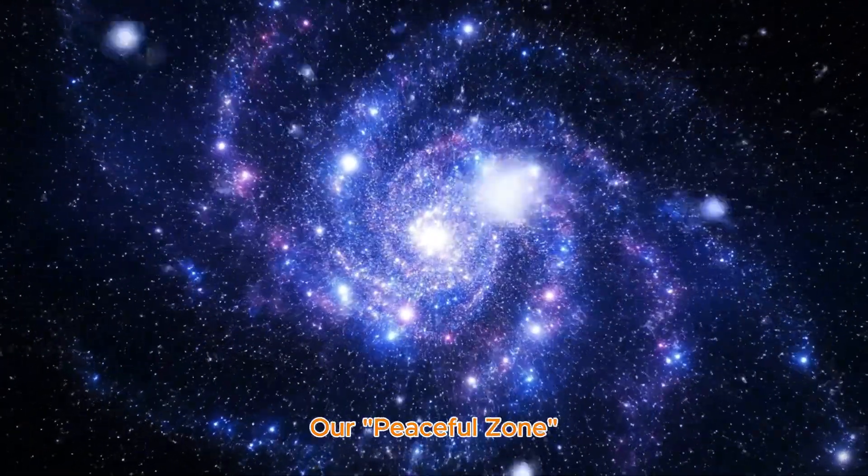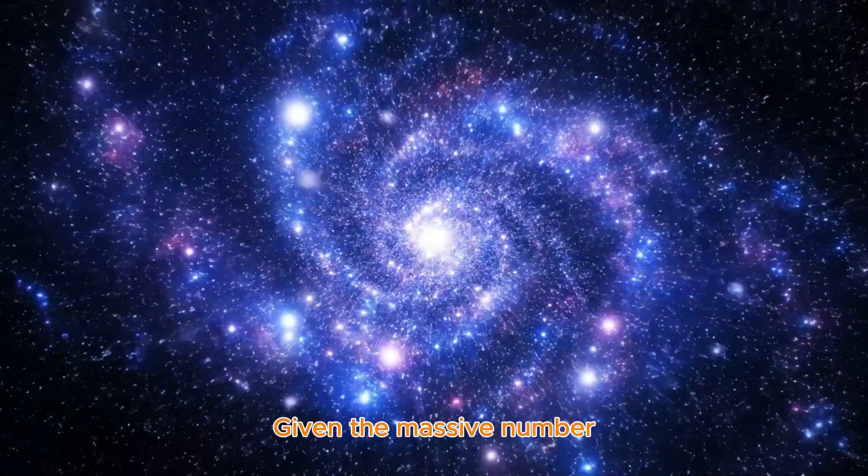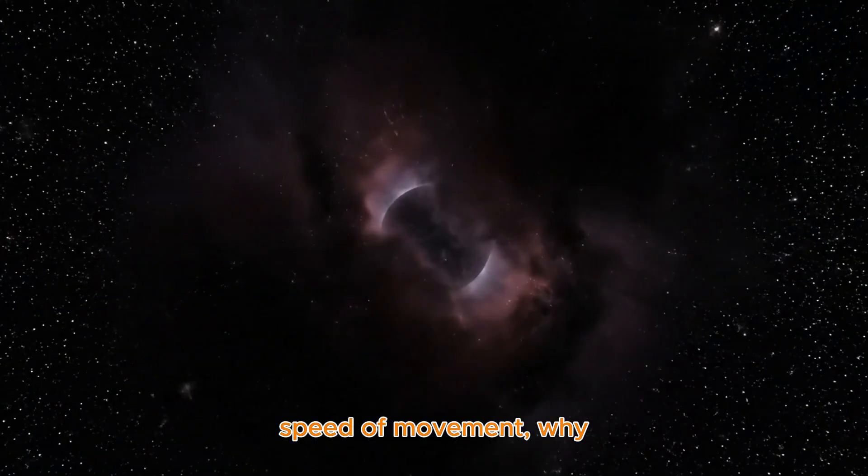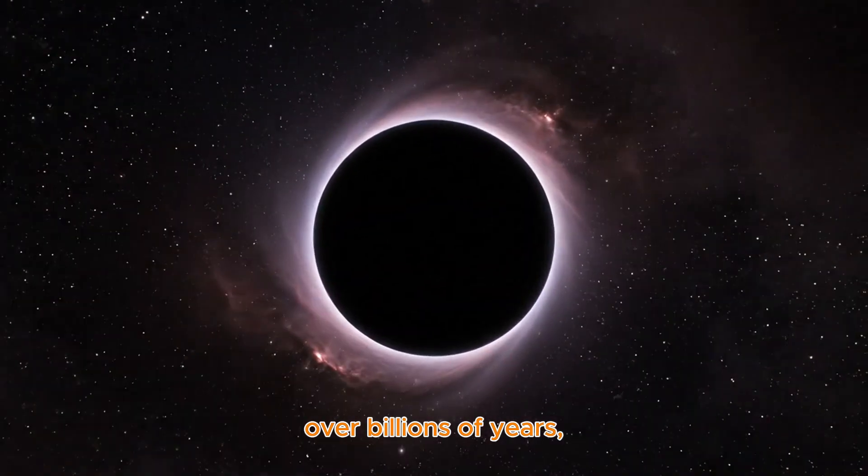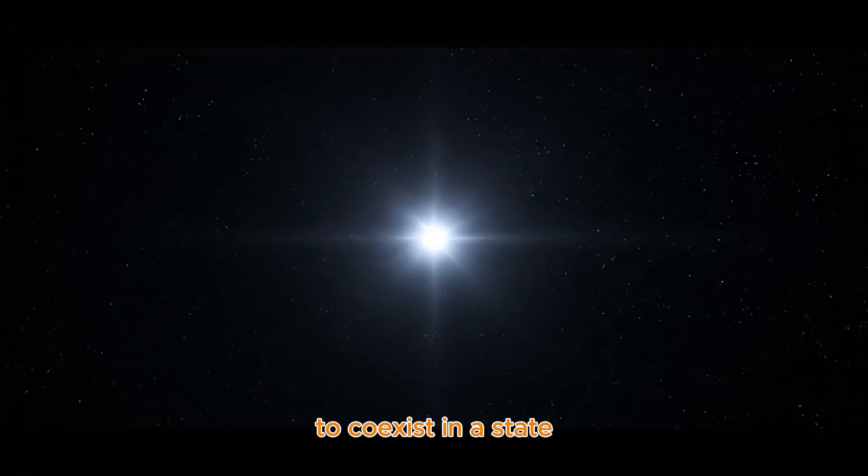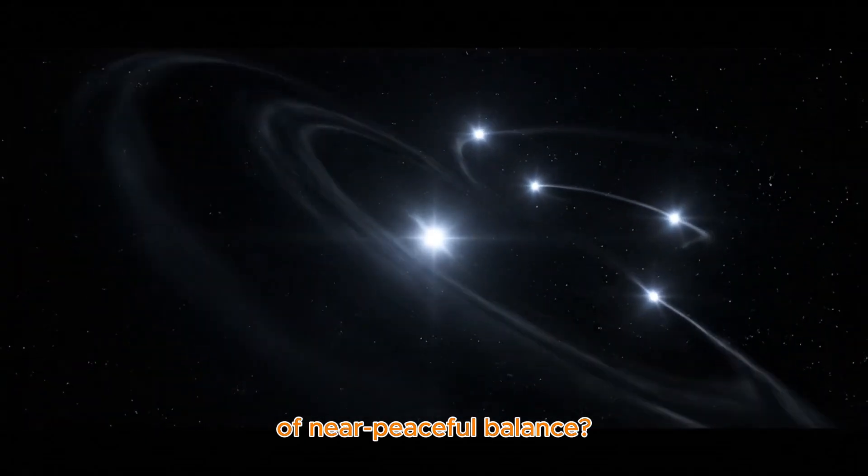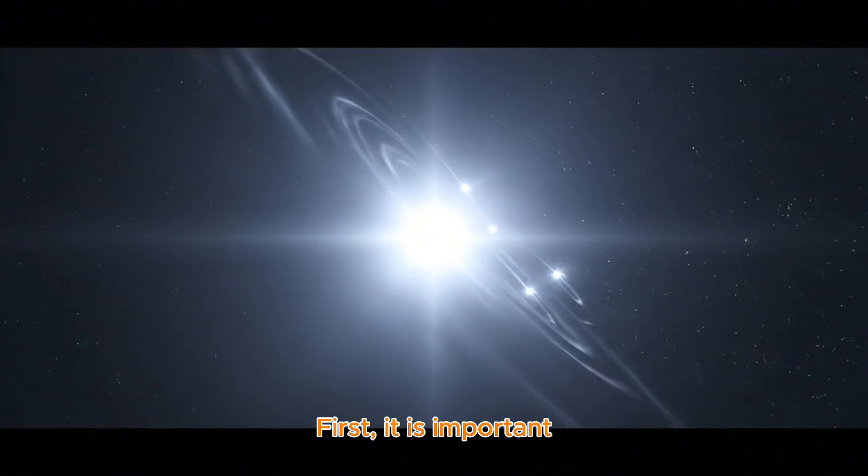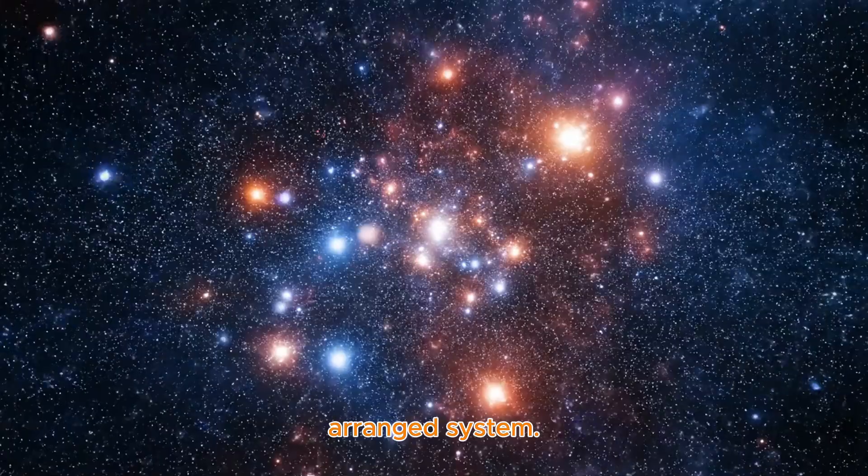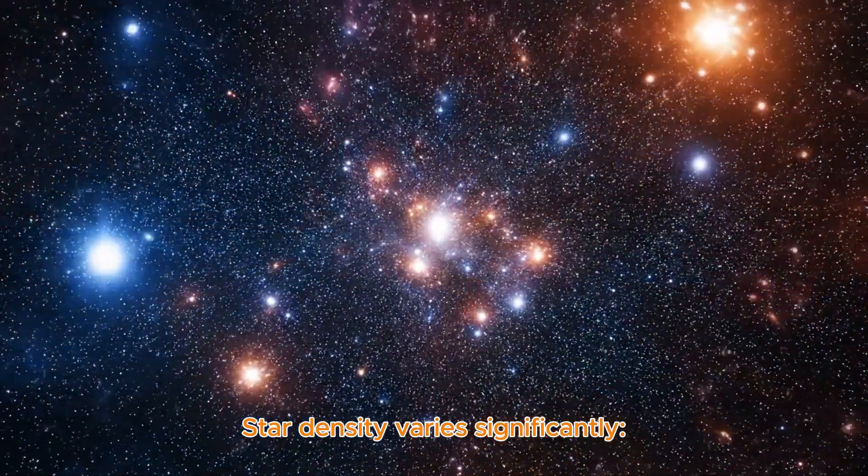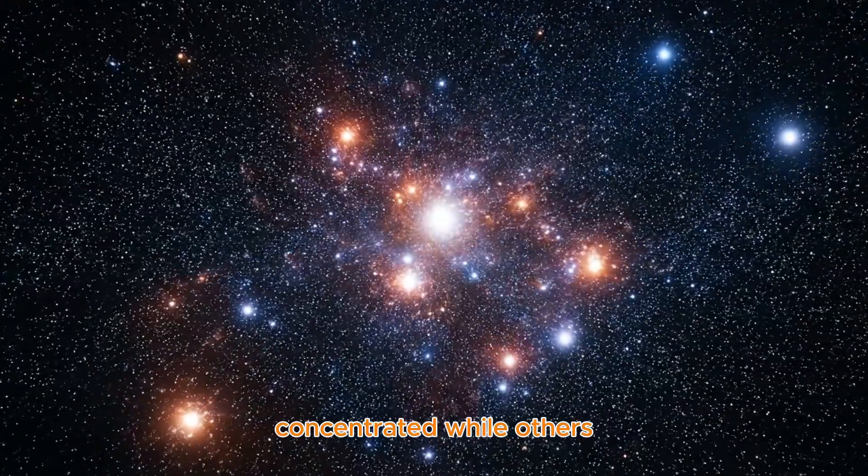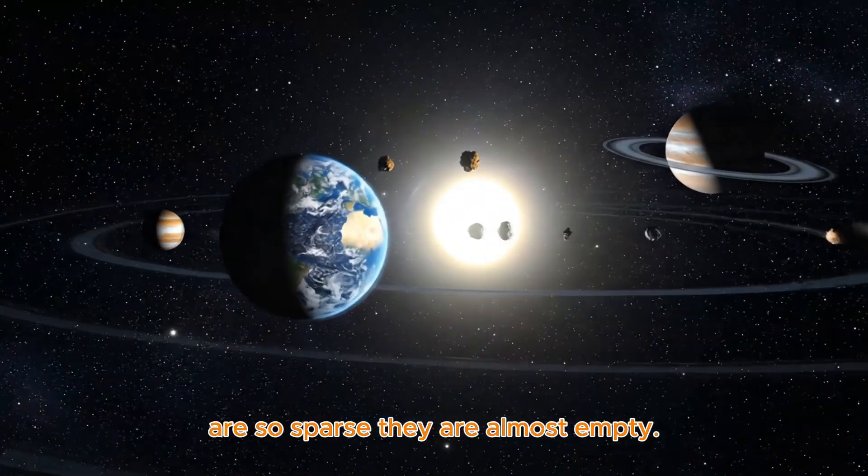Uneven star density and our peaceful zone. Given the massive number of stars and the dizzying speed of movement, why have stars in the Milky Way, over billions of years, mostly avoided violent collisions and managed to coexist in a state of near-peaceful balance? First, it is important to understand that the Milky Way is not a uniformly arranged system. Star density varies significantly. Some regions are densely concentrated, while others are so sparse they are almost empty.